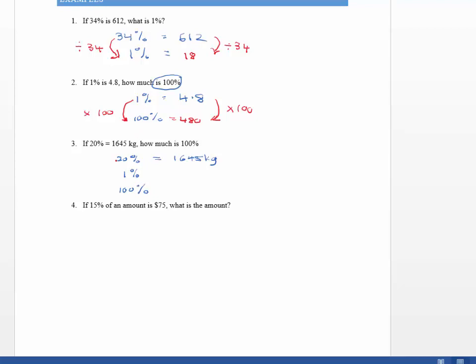So we follow the steps. How does 20% become 1%? Well, that's quite simple. We divide it by 20. And how does 1% become 100%? Well I must multiply that by 100.